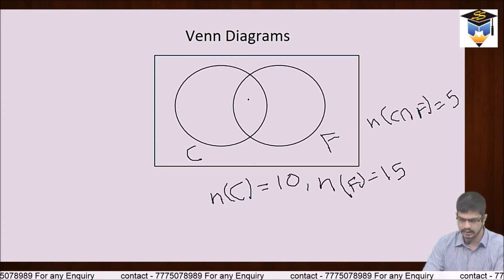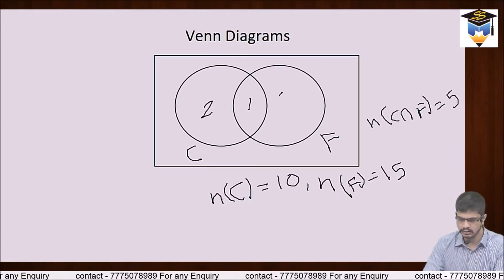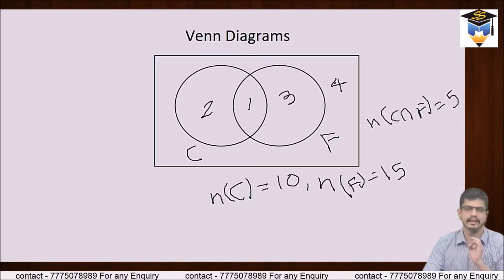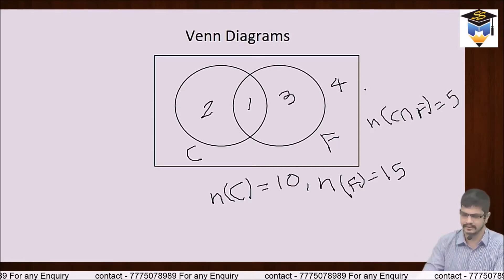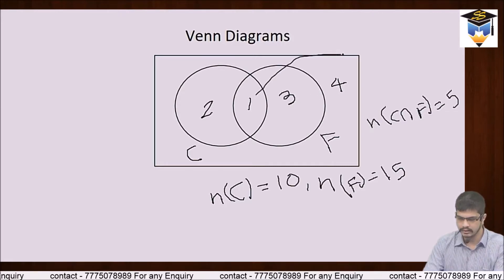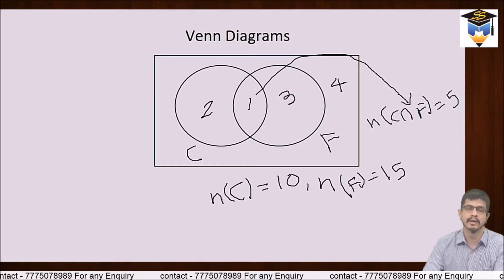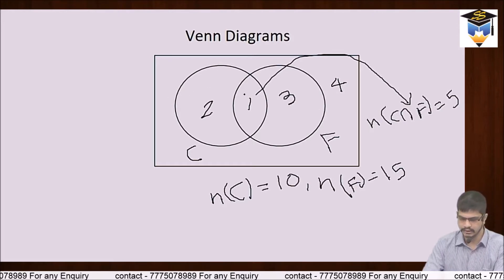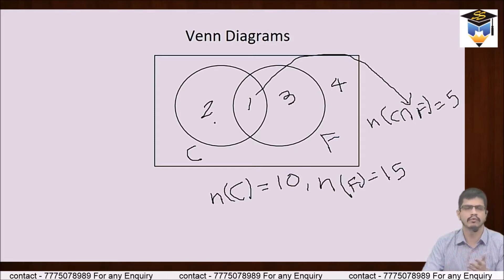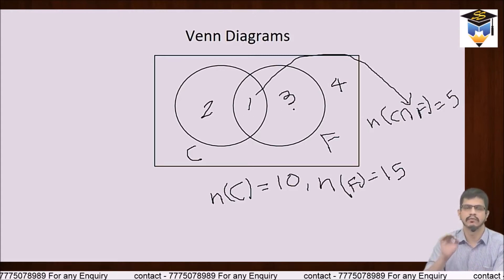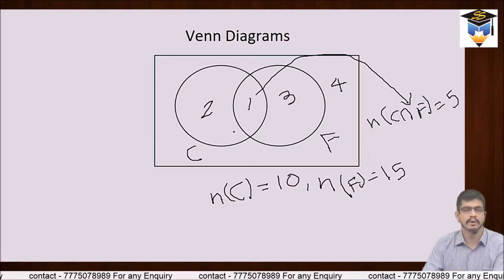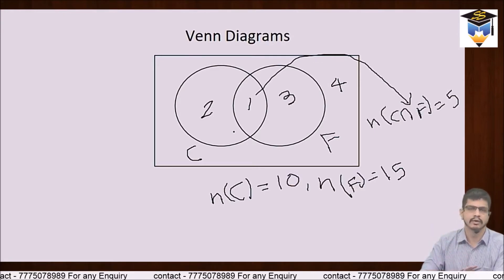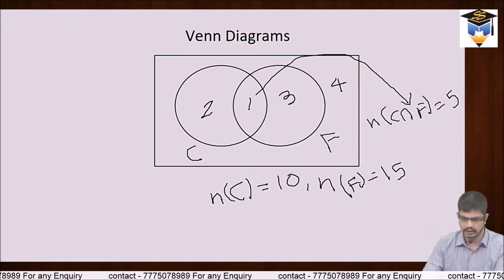So let us number the areas: this is 1, this is 2, this is 3, and this is 4. In a set theory problem with two types of sets, there are 4 types of areas. Area 1 is called A ∩ B — in our case cricket ∩ football — so that is 5. Area 2 means only cricket is liked, not football. Area 3 means only football is liked, not cricket.